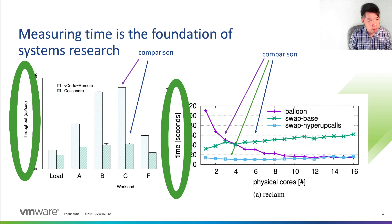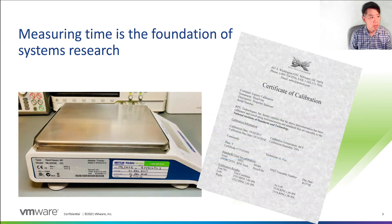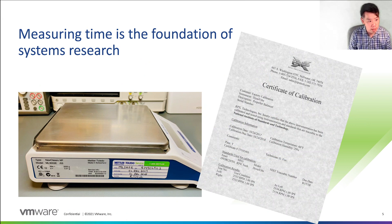Even though time is central to our evaluations in systems research, we usually don't think too much to check whether our ability to measure time is correct. If our time measurement instruments are inaccurate, that could lead to misleading evaluations, especially when we compare across systems. This runs in contrast to other more mature scientific fields where reproducibility is important. In these fields, they start with instruments that are calibrated, known to be functioning correctly, and tested regularly. Calibrating these instruments reduces the potential for measurement error and is the foundation for good science.